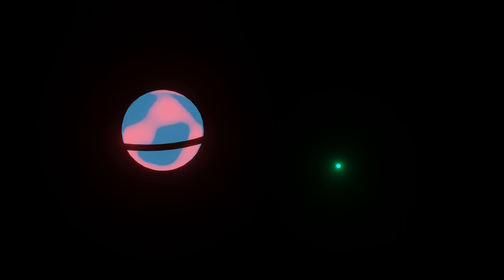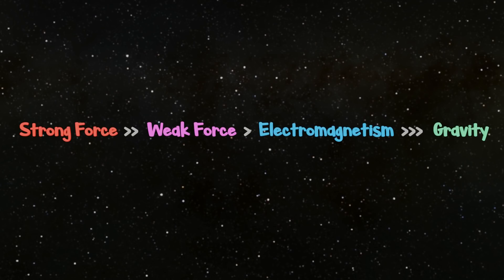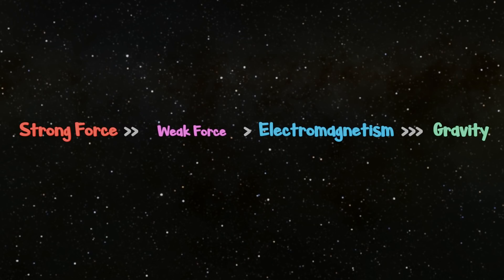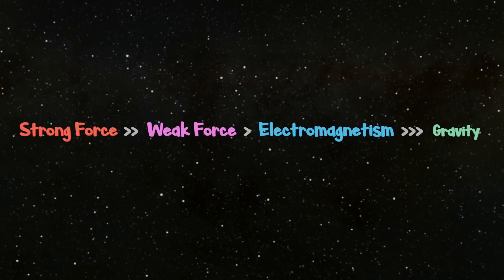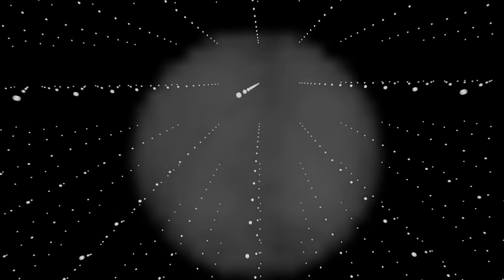When we look around at the strength of the fundamental forces, it seems a miracle that anything exists at all. If the strong force was just a tiny bit stronger, then stars would fuse so fast as to exhaust their fuel in seconds. If the weak force was just a tiny bit weaker, then large atoms wouldn't exist. If gravity was either a bit weaker or a bit stronger, then stars would either never form or burn out in millions instead of billions of years.